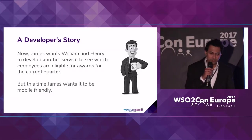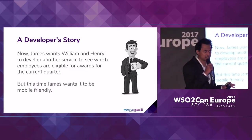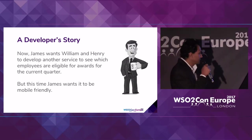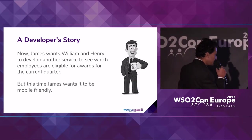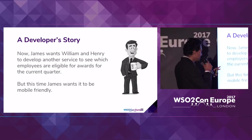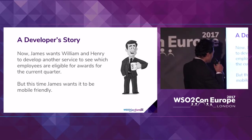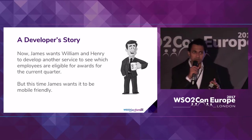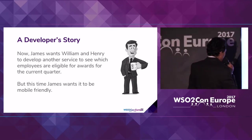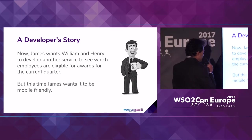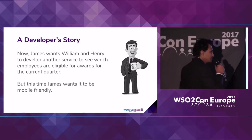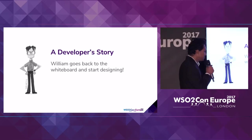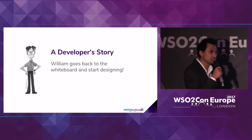All right, back to the story. Both developers have successfully developed their services. Now James, CEO of the Datadump company, wants his developers to develop another service — to figure out which employees are eligible for awards for the current quarter. This time, James wants this service to be mobile-friendly. When it is mobile-friendly, we have to use JSON. So once again, let's look at each developer's approach to solve this problem.